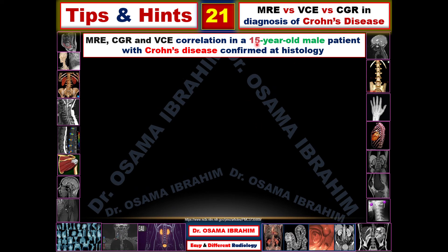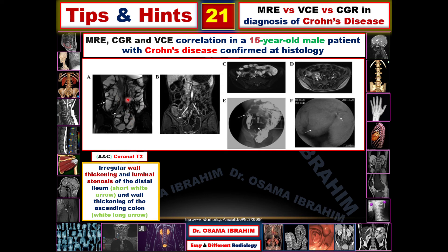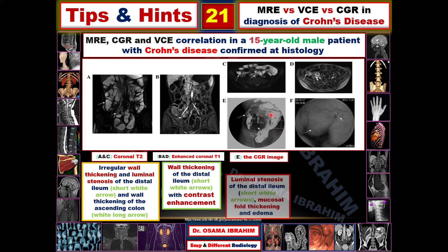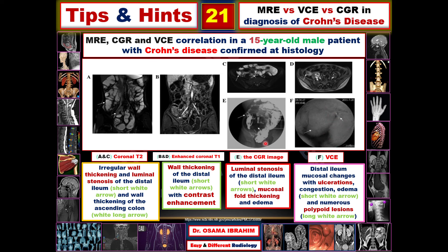Another case — a 15-year-old male with confirmed Crohn's disease — shows on T2 coronal imaging: wall thickening and luminal stenosis, with the ascending colon showing areas of thickened wall confirmed on the contrast-enhanced study as enhancing wall visible on the axial image. The conventional radiography shows luminal stenosis, mucosal fold thickening and edema, fibro-fatty proliferation, and bowel loop separation. VCE shows ulcerations and polypoid lesions better than other modalities.